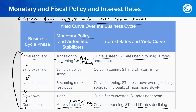Next is early expansion. Stimulus policy slows, so the curve is flattening and both short-term and long-term rates are rising. The central bank is raising those short-term rates.